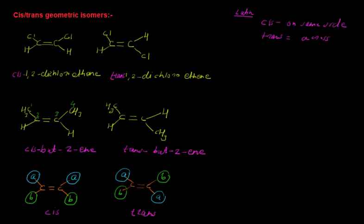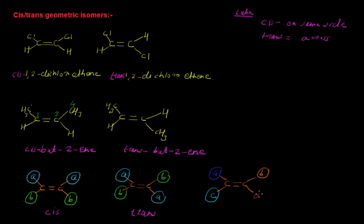One more important point: if you have a carbon-carbon double bond with groups A, B, C, and D — meaning all four groups are different — then we cannot apply the cis and trans naming system. Instead, we have to apply the E and Z naming system, which we will see in the next video.